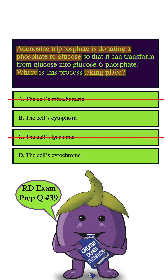How about D? Cytochromes are actually an essential part of the electron transport chain, but they do not get involved in glycolysis, and glycolysis certainly doesn't take place inside a cytochrome, as the answer choice is alluding to. So we can eliminate this answer choice as well, leaving us with B, and that is indeed the correct answer.